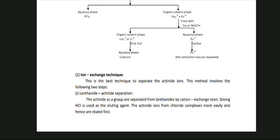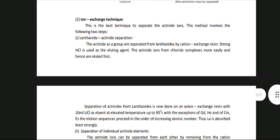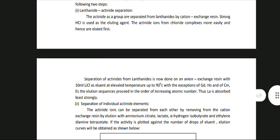Ion exchange technique: This is the best technique to separate actinide ions and involves two steps. Step 1 — Lanthanide-actinide separation: Actinides as a group are separated from lanthanides by cation exchange resin, using strong HCl as the eluting agent. Actinide ions form chloride complexes more easily and hence are eluted first. Separation is also done on an anion exchange resin with 10 M LiCl as eluent at elevated temperature up to 90°C. With the exceptions of Gd, Ho and Cf, Cm, Es, the elution sequence proceeds in order of increasing atomic number.